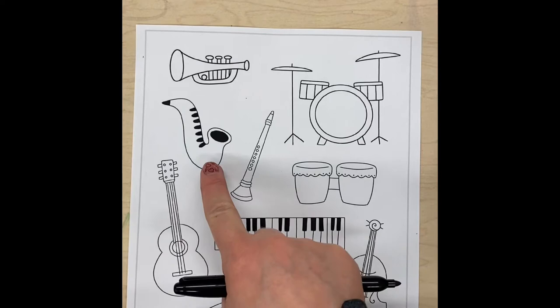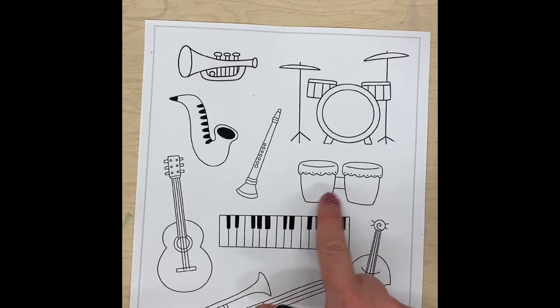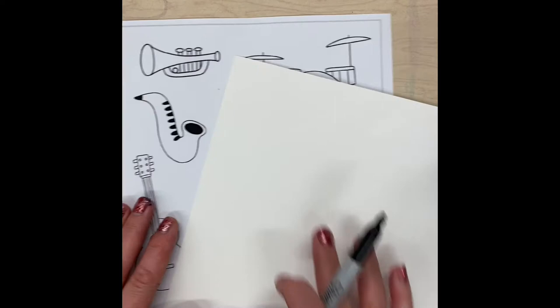If you're going to draw saxophones or trumpets, you might want some yellow for the brass of the instrument. If you're doing the guitar or drums like these, you're going to want some brown for the wooden part.